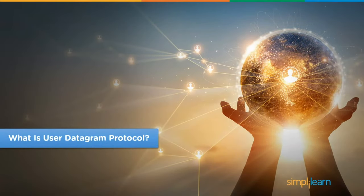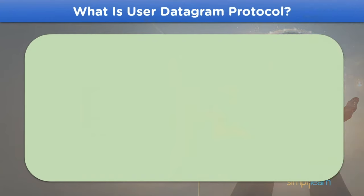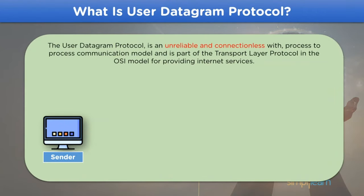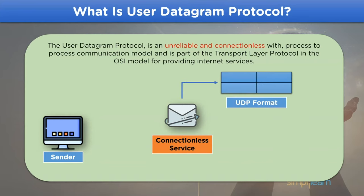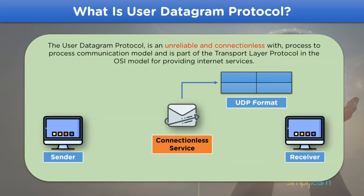Let's move on with the first heading: what is User Datagram Protocol? The User Datagram Protocol, commonly known as UDP, is designed to be unreliable and connectionless in nature, which applies a process-to-process communication model for data exchange between devices. It is active in the transport layer of the OSI model and is used to transfer data related to internet services over the network channel, where process-to-process communication refers to the use of port numbers in the header format during data transmission.